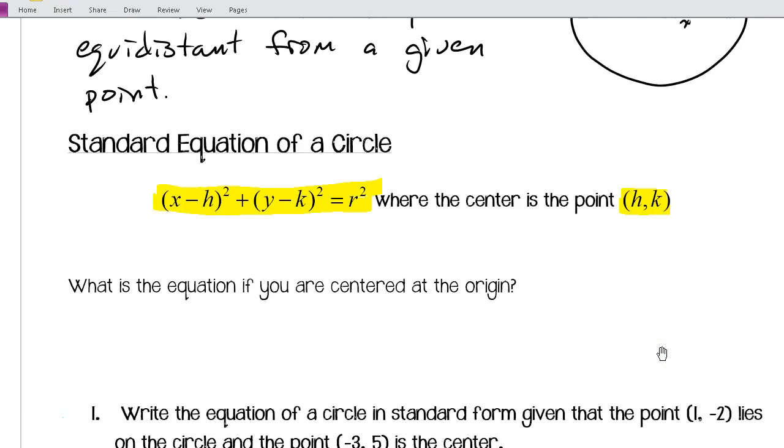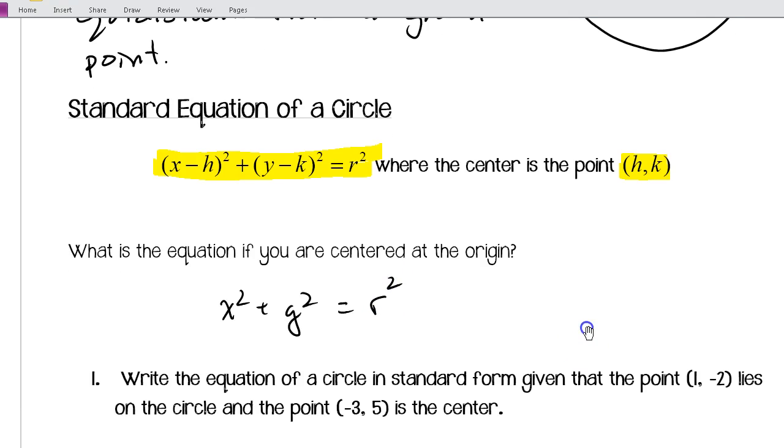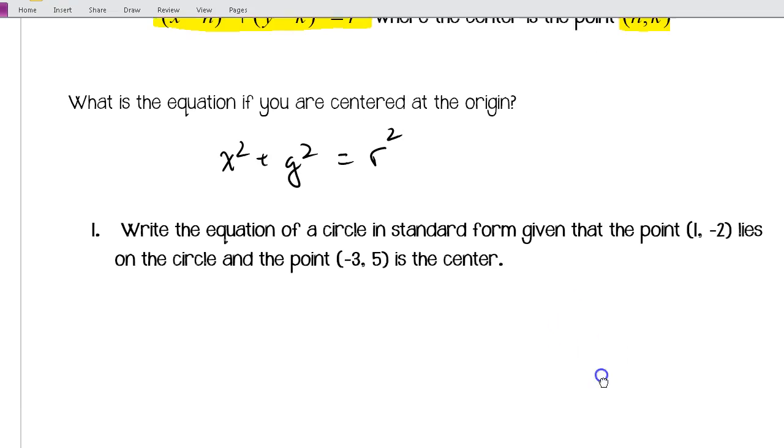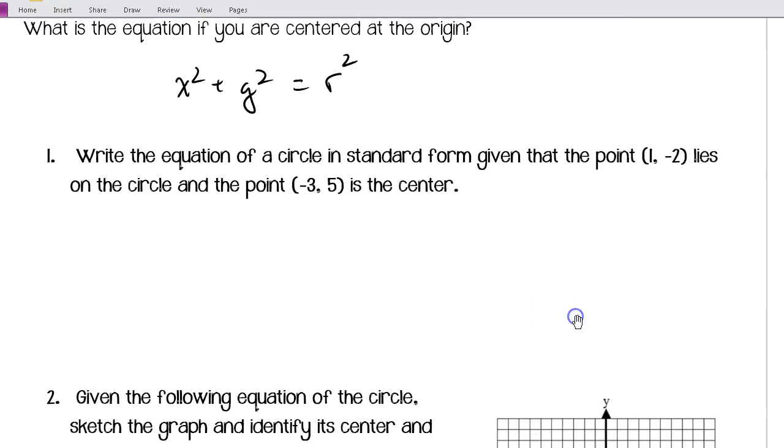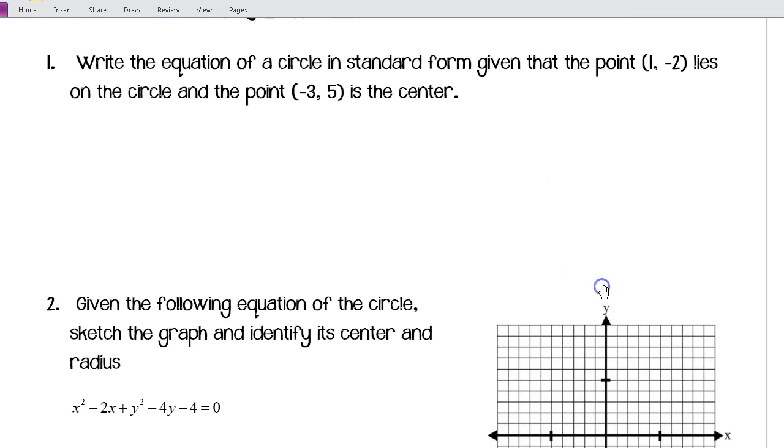Now, if our circle is centered at the origin, then this simply becomes x squared plus y squared is equal to r squared. And let's take a look at a few examples. If you want to try these examples on your own, then go ahead and restart the video to see if you got them right, or you can just follow along as we go.